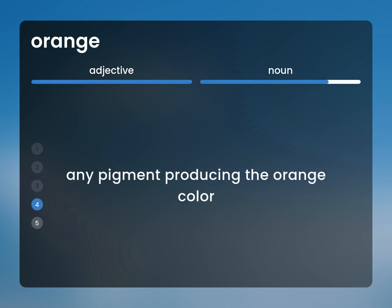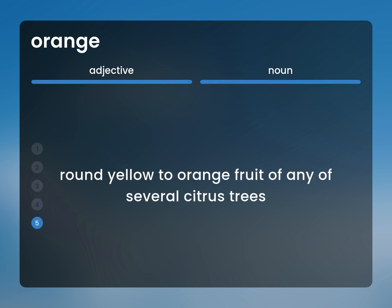Any pigment producing the orange color. Round yellow to orange fruit of any of several citrus trees.